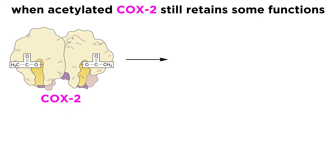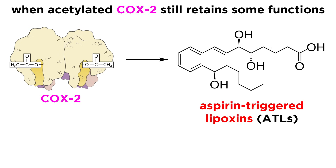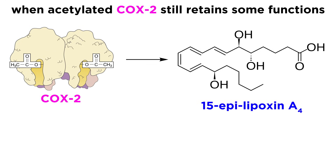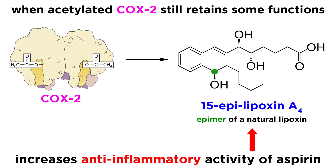Perhaps most interestingly, acetylation of cyclooxygenase II by aspirin leaves certain enzyme functions intact, leading to the creation of unique compounds called aspirin-triggered lipoxins, or ATLs, such as 15-epi-lipoxin A4. This compound is an epimer of a lipoxin made in the body, meaning they differ in the stereochemistry of only one chiral center. This epimer has been found to have potent anti-inflammatory effects, and it is thought that this actually increases aspirin's anti-inflammatory activity.